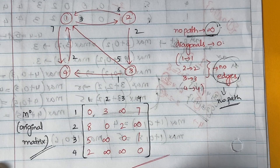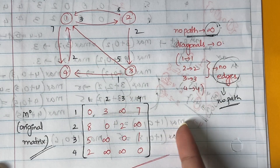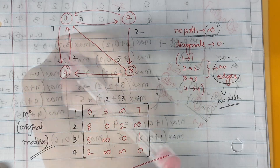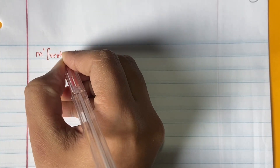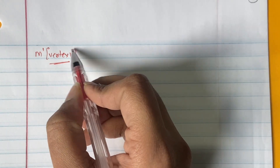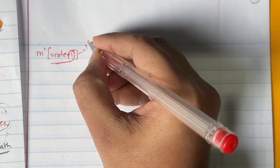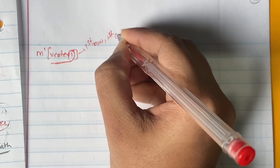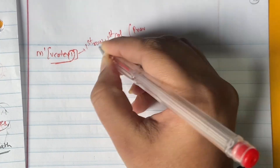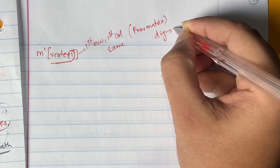This is your original matrix M0. Now let us start building further matrices using this initial matrix. We are now doing M1. M1 is for vertex 1, meaning we check if there is any better path through vertex 1 from any node to any other node. The rule is: copy the first row and first column as-is from the previous matrix, and all diagonal elements are also 0.